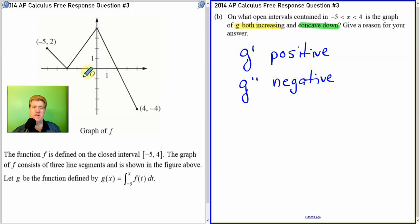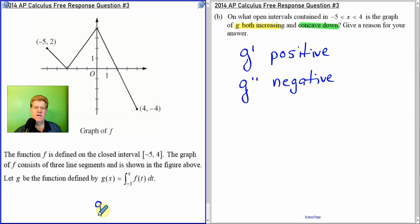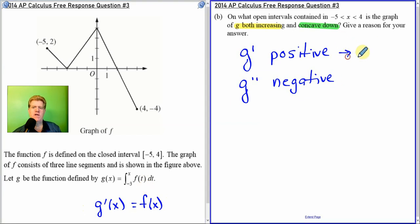Concave down is when the second derivative is negative. Now how do we find the first and second derivative based on this graph? All right, here's what you got to remember. Fundamental theorem of calculus. Okay, it's an easy application here. If g is the integral of f, if I take the derivative of g it equals f. Okay, that's it. The derivative of g equals f. So in this first step up here, if I want to know when g' is positive, well I know that g' is the same as f. So on this graph where is f positive?